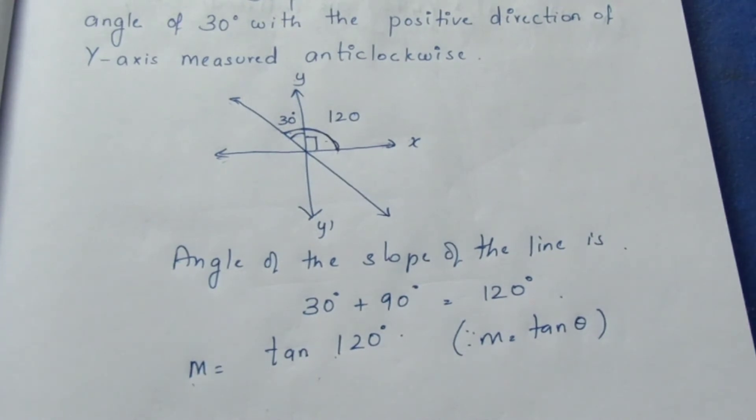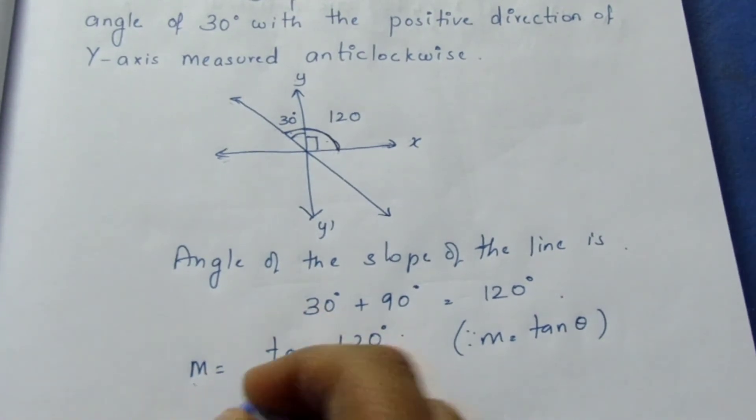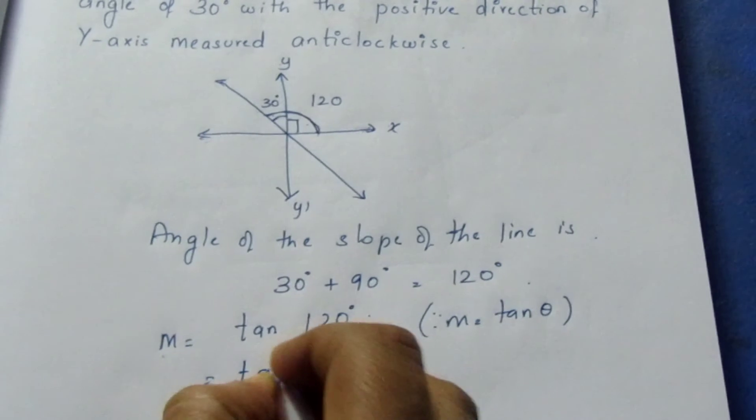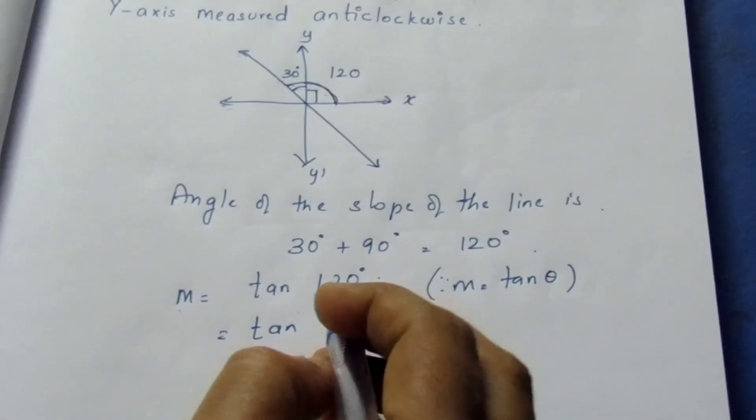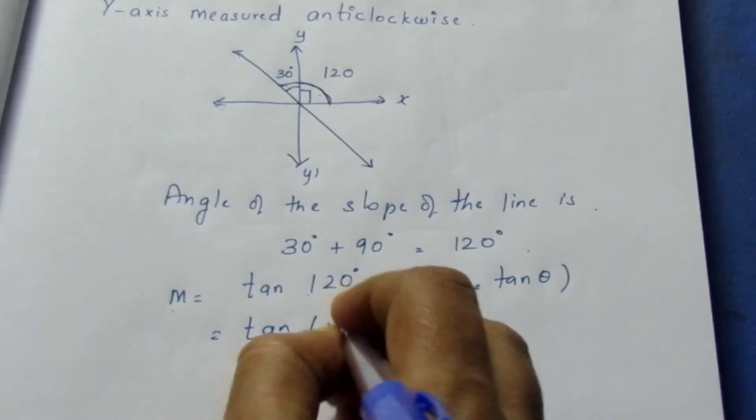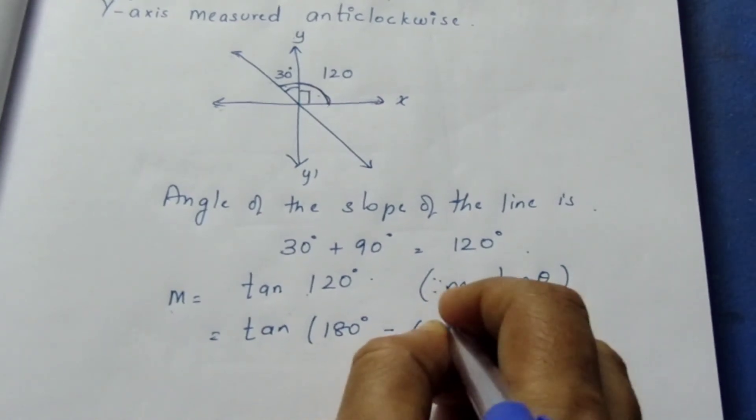We can split tan 120 as tan 180 minus 60 degree.